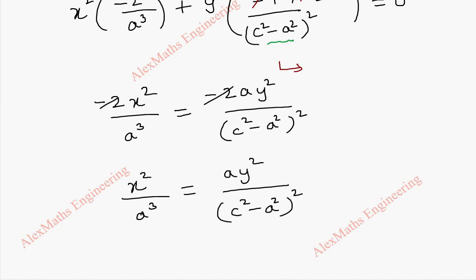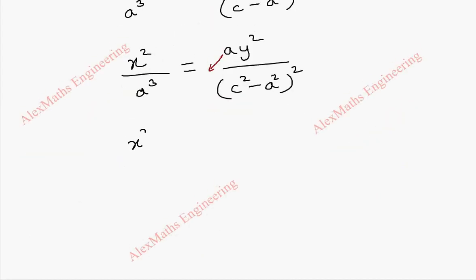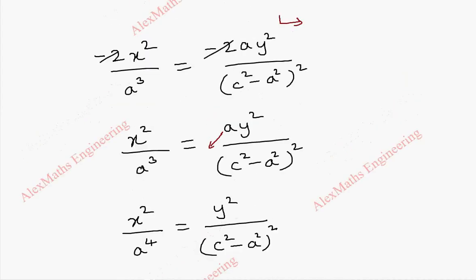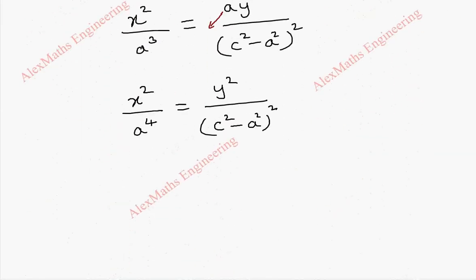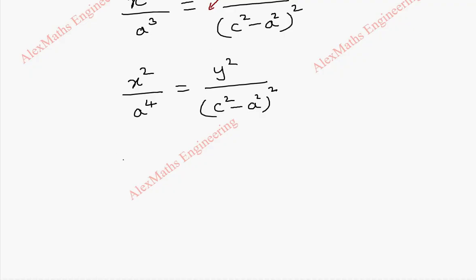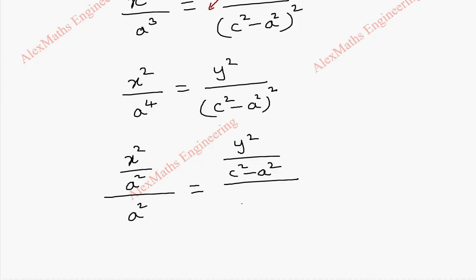By cross multiplication we get x² / a⁴ = y² / (c² - a²)². We are going to use a ratio property, so we need to split these terms. We rewrite x² / a⁴ as (x² / a²) / a², and y² / (c² - a²)² as (y² / (c² - a²)) / (c² - a²), so that each ratio has a recognizable numerator.